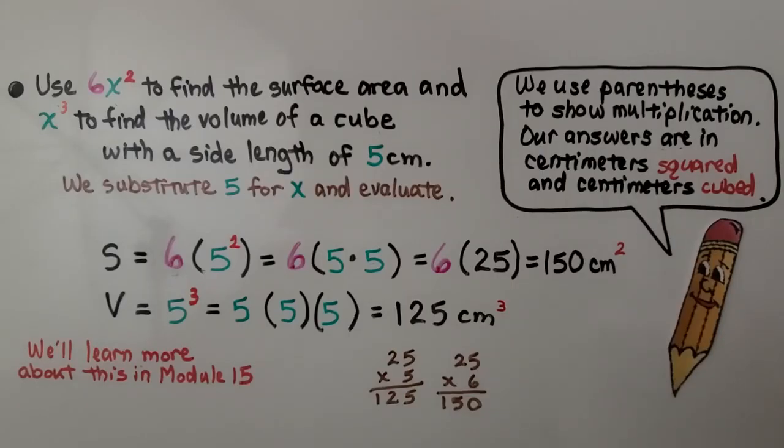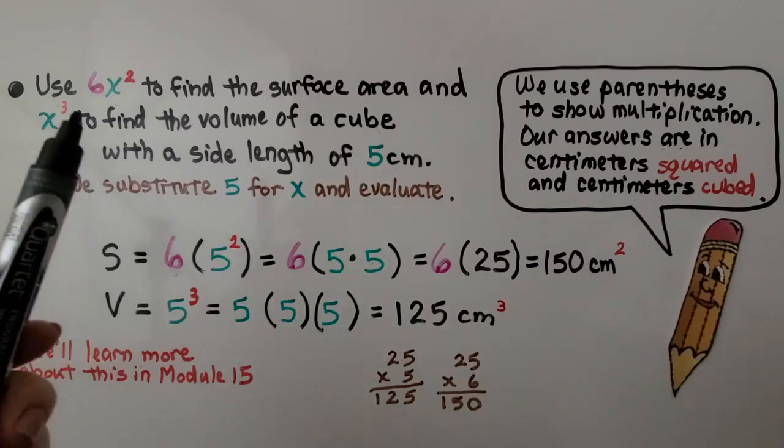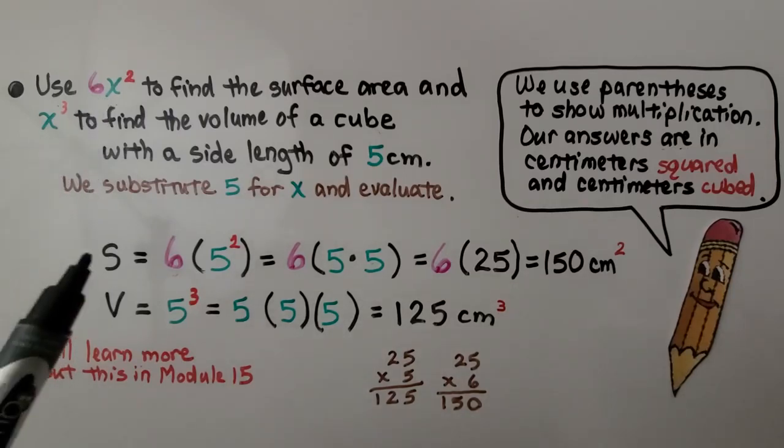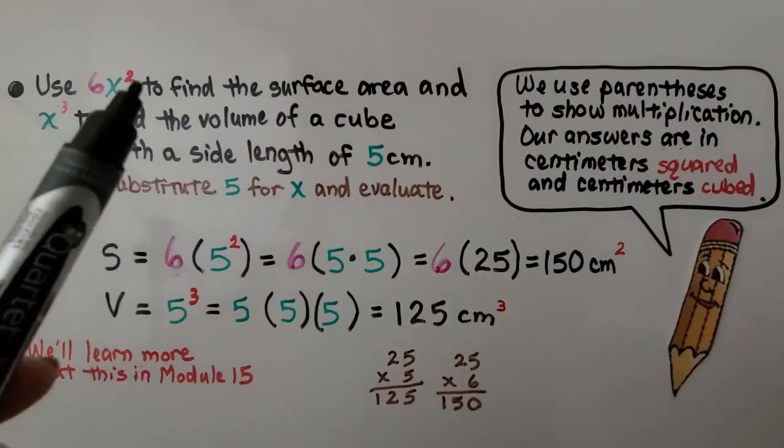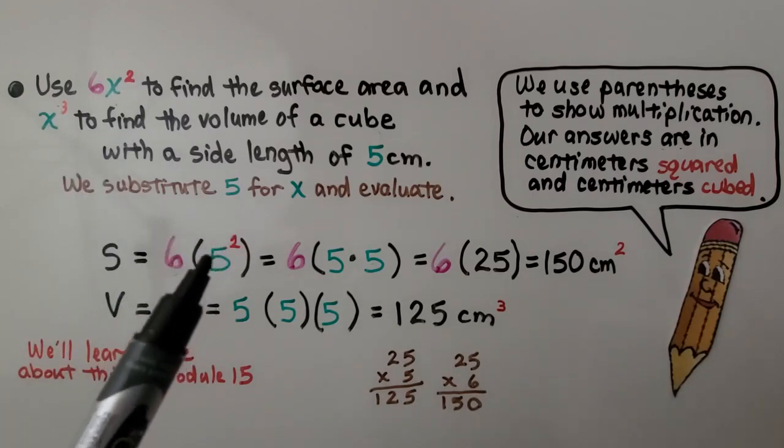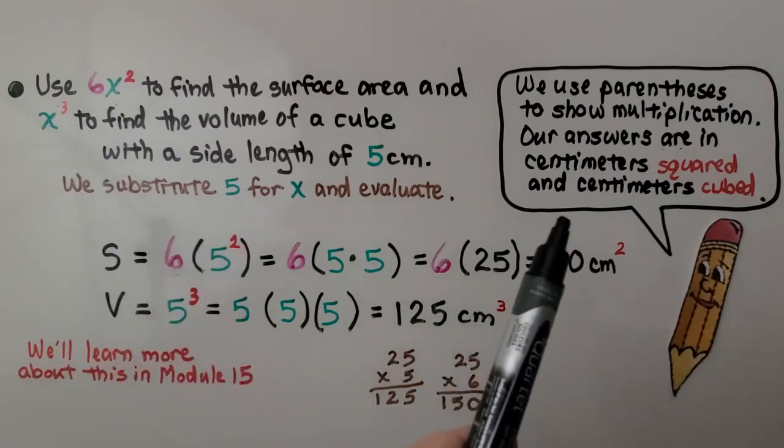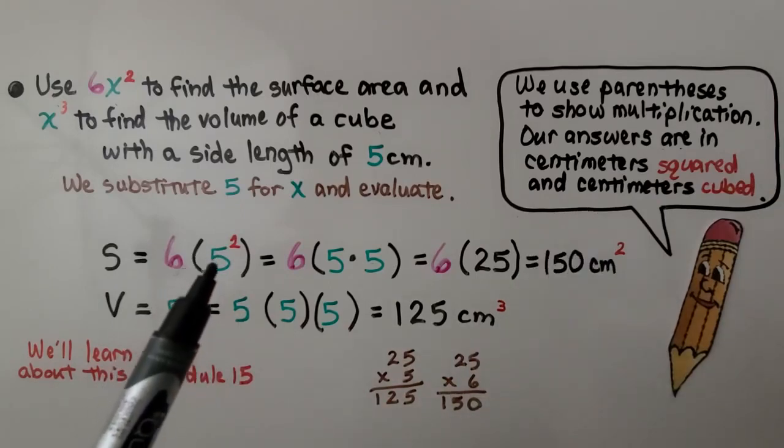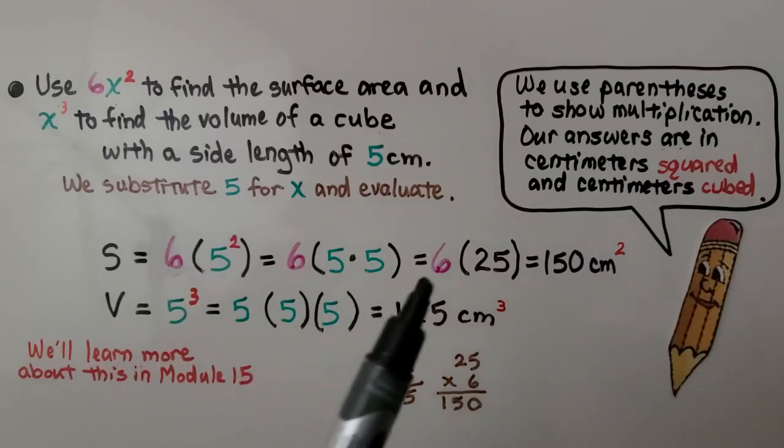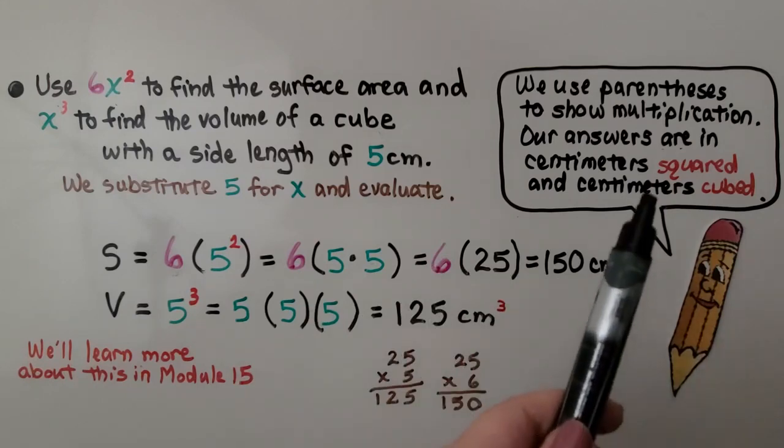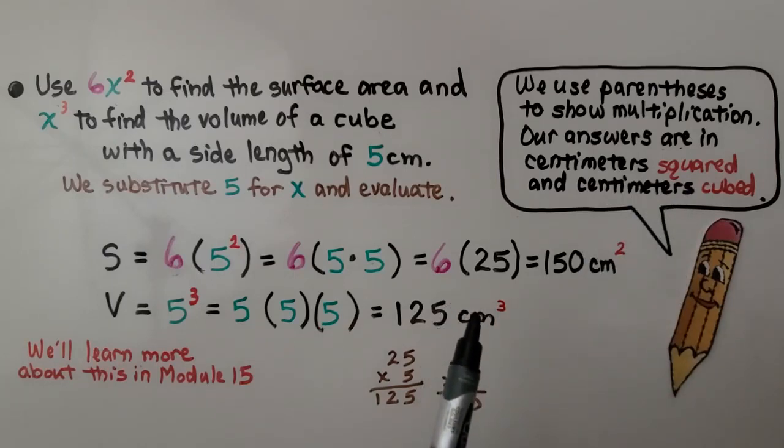So here it's telling us to use 6x squared to find the surface area, and x cubed to find the volume of a cube with a side length of five centimeters. Remember a cube has all of its sides congruent to each other. And we substitute five for x in the expressions and we evaluate. We have a capital S for surface area and we have 6x squared. So we have six times five squared. Be careful, we use parentheses to show multiplication. So five squared is five times five. That means we have six times 25. That's equal to 150 centimeters squared. And our answers are in centimeters squared or centimeters cubed.